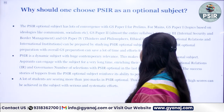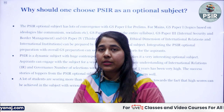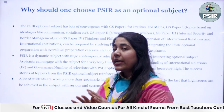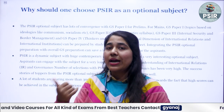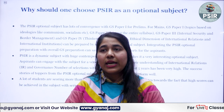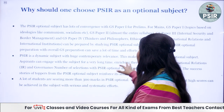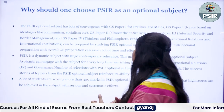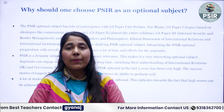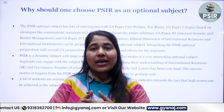For example, GS Paper 1 topics like communism and socialism overlap with PSIR. GS Paper 2 is almost entirely the same as PSIR. GS Paper 3 on internal security and border management also falls under Political Science and International Relations. GS Paper 4 covers thinkers, philosophers, ethical dimensions of international relations, and international institutions — all part of PSIR. So with Prelims, you are also covered for GS Papers 1, 2, 3, and 4.